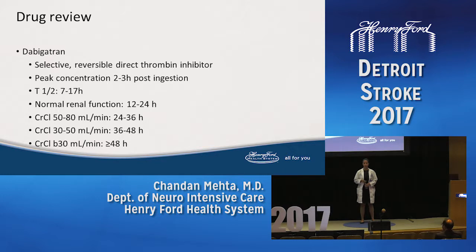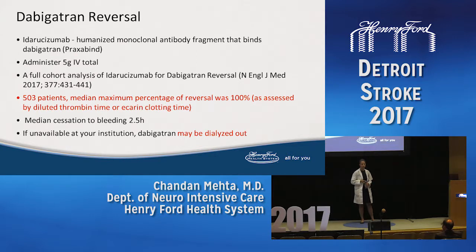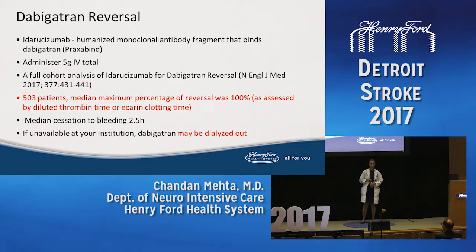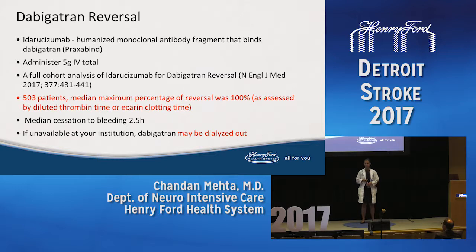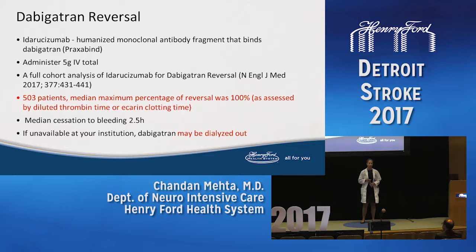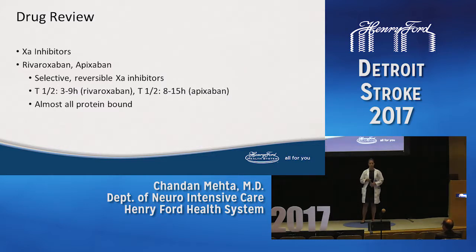Dabigatran is a selective reversible direct thrombin inhibitor with peak concentration within two to three hours post-ingestion and a half-life of seven to 17 hours, significantly prolonged when creatinine clearance drops. Since 2015, idarucizumab (Praxbind) — a humanized monoclonal antibody fragment — is administered as two 2.5-gram doses for a total of five grams IV. Full cohort analysis in 503 patients showed median maximum reversal of 100%, with bleeding cessation in approximately two and a half hours. If unavailable, dabigatran can be dialyzed out due to its low protein binding.